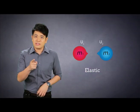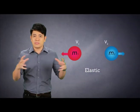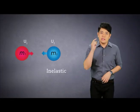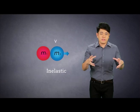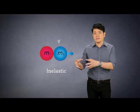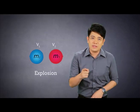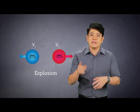In an elastic collision, both bodies will separate after collision. In an inelastic collision, both bodies will move together after collision. In an explosion, the total momentum before and after collision is zero. For all three types of collision, you can use the same basic formula.